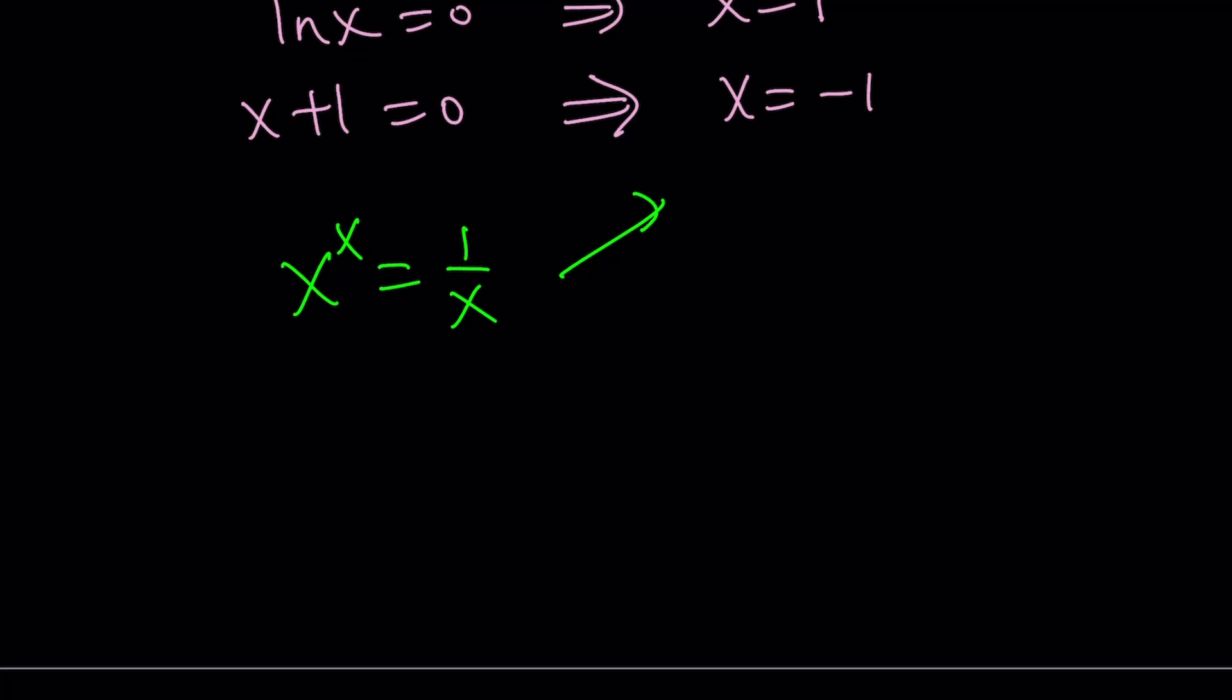So if x is 1, 1 to the power of 1 equals 1 over 1, check, great. And if x is negative 1, negative 1 to the power of negative 1, which means the reciprocal of negative 1, which is 1 over negative 1, which is negative 1, is equal to 1 over negative 1. We already talked about it, and that also checks. Therefore, both solutions are good and valid.